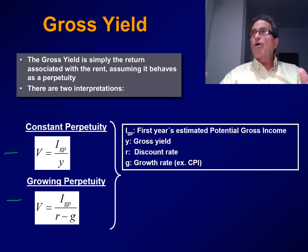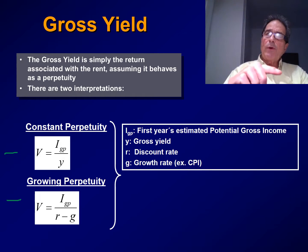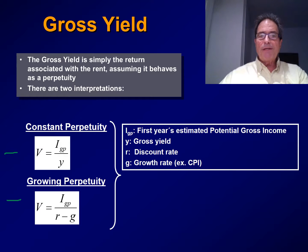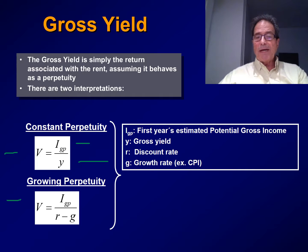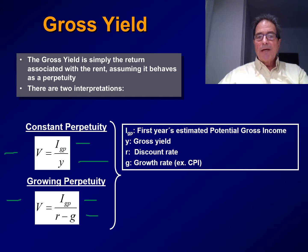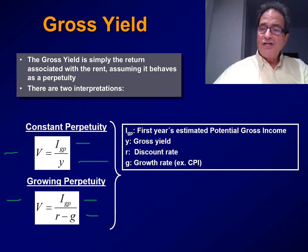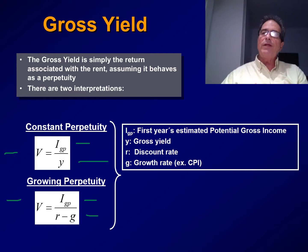In the case of a constant perpetuity, we are assuming that the rent stays constant forever. So the value of the property is given by simply dividing this rent by the yield. In the case of the growing perpetuity, the value of the property is obtained by dividing the rent — in this case the rent for the first year — by the difference between the discount rate R and the growth rate G.